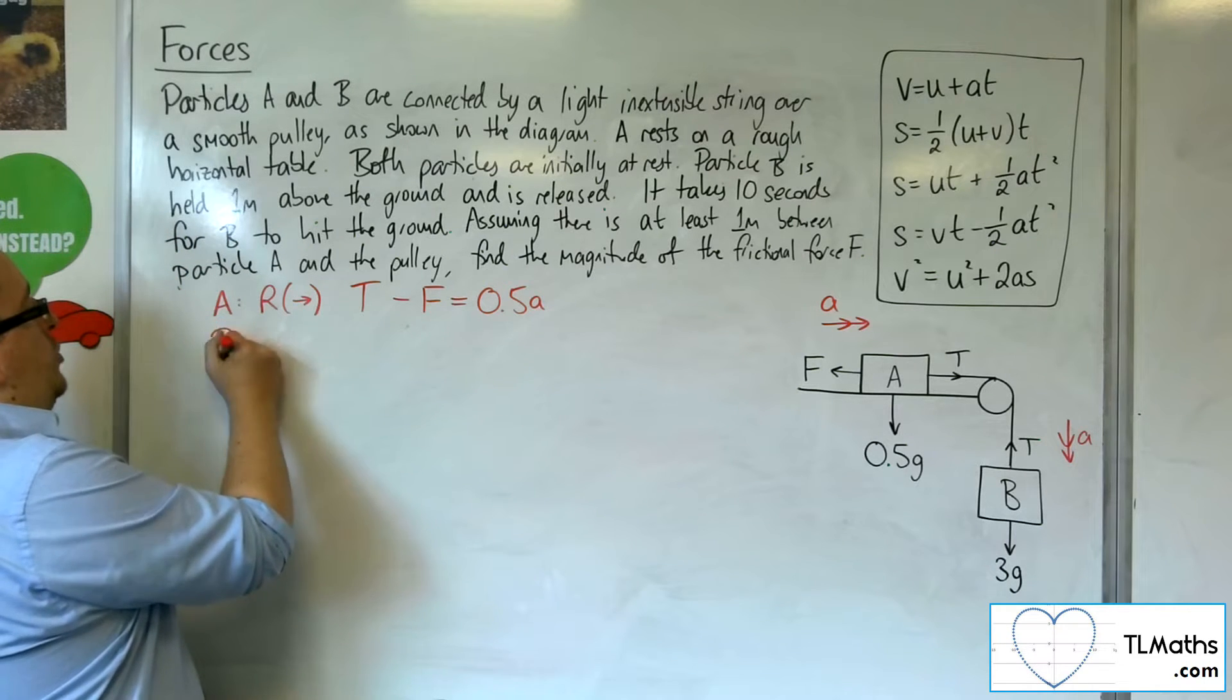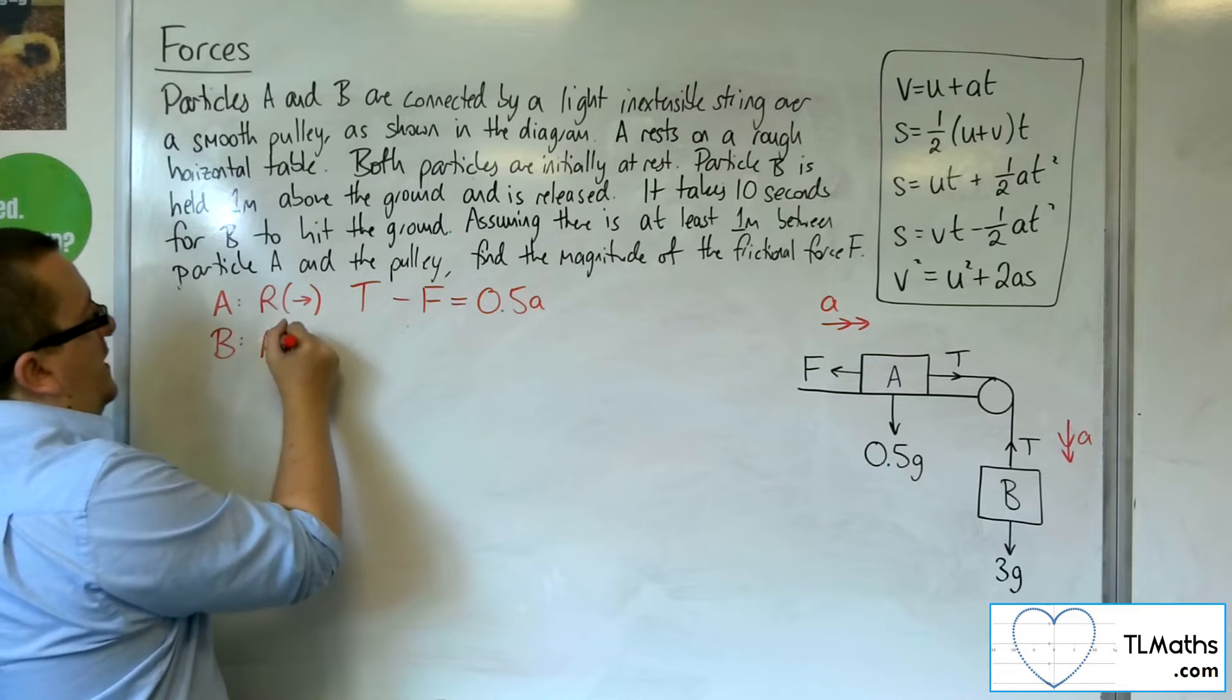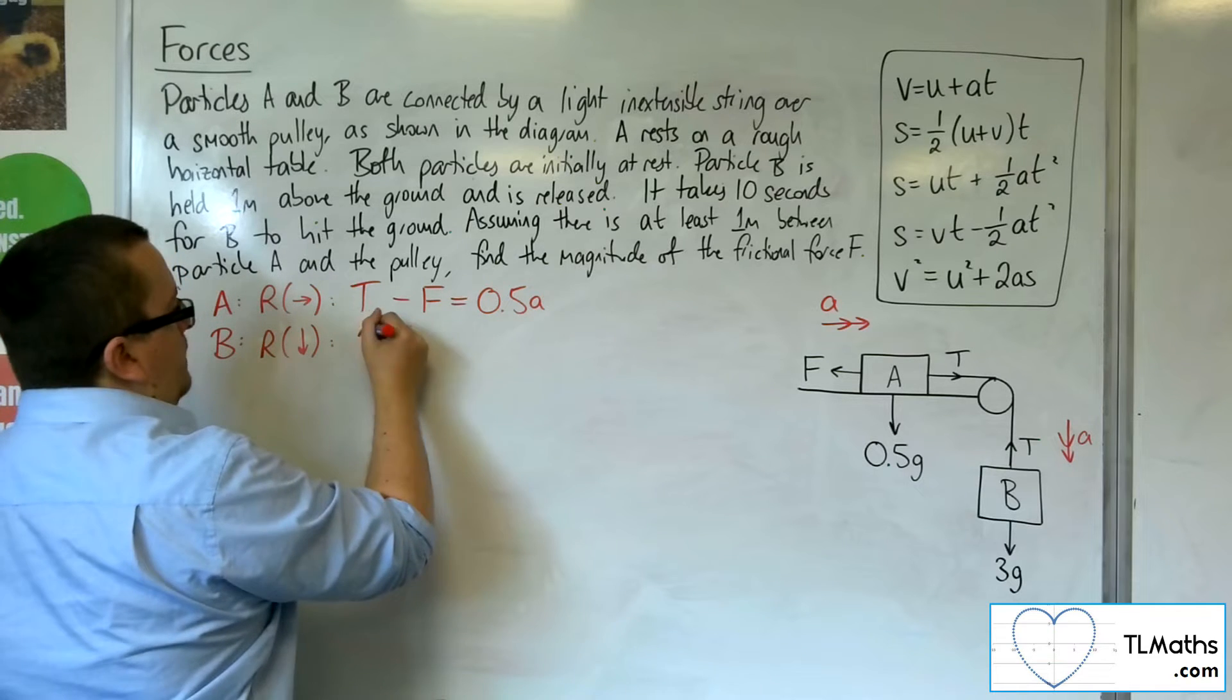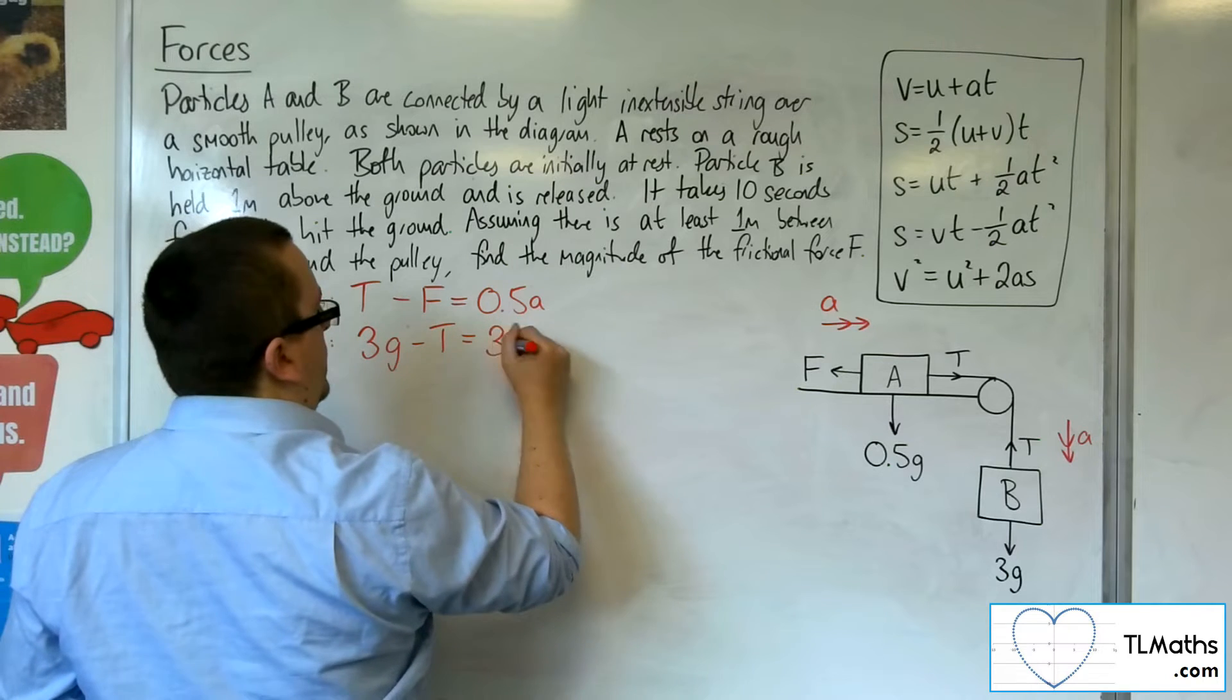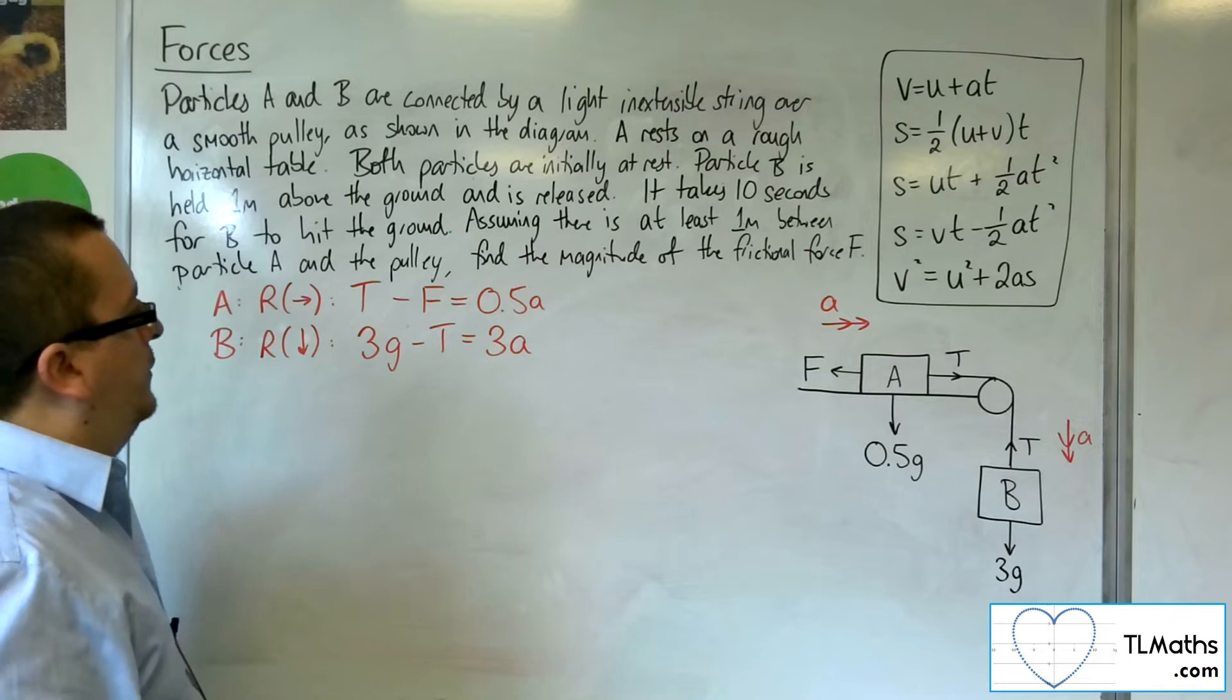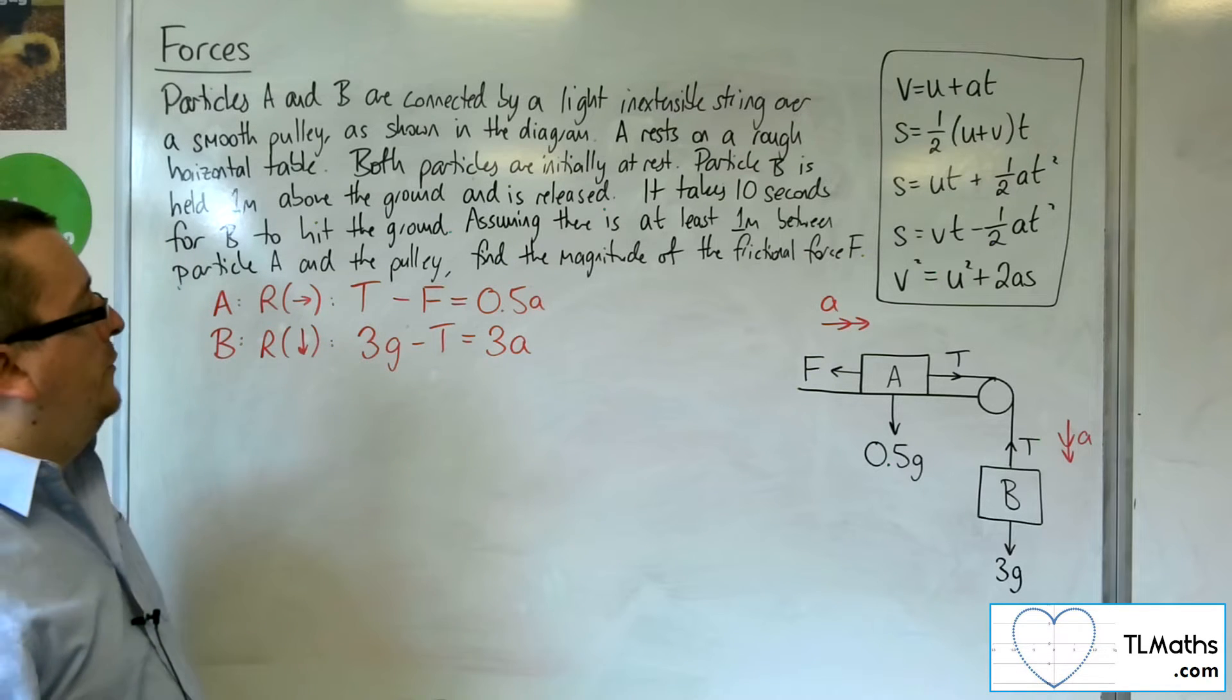Now the second equation for B, resolving downwards, taking down as positive. We've got 3G, take away T, is equal to the mass times the acceleration.